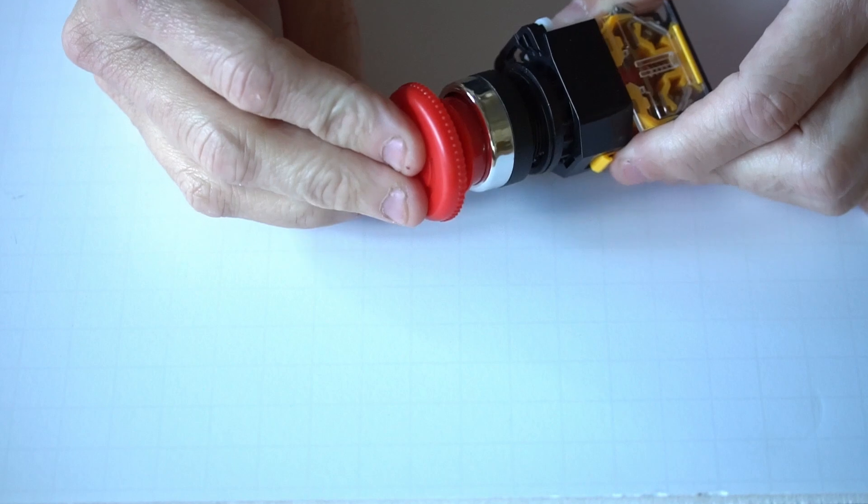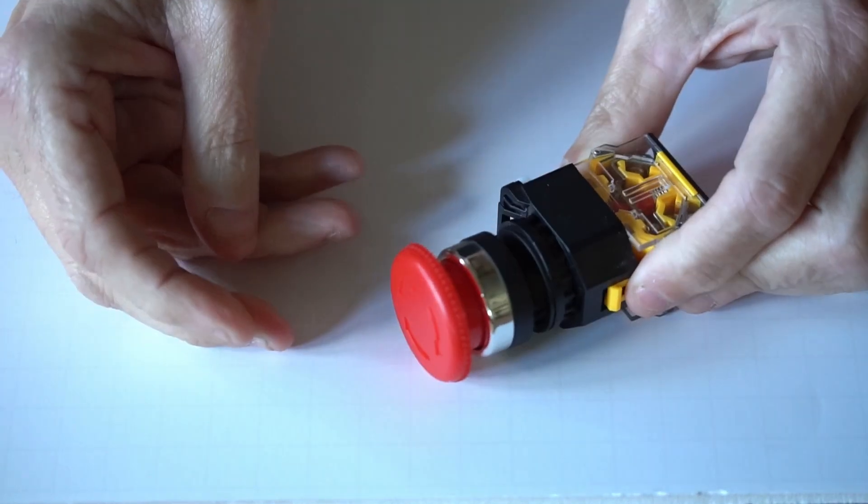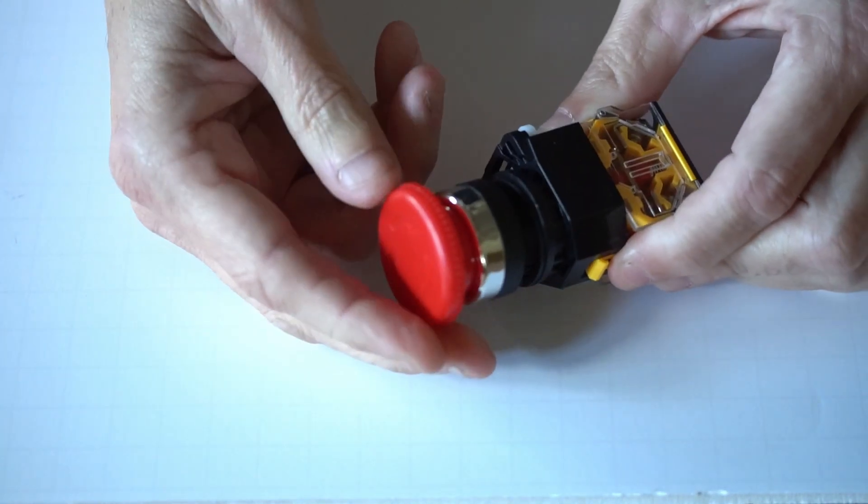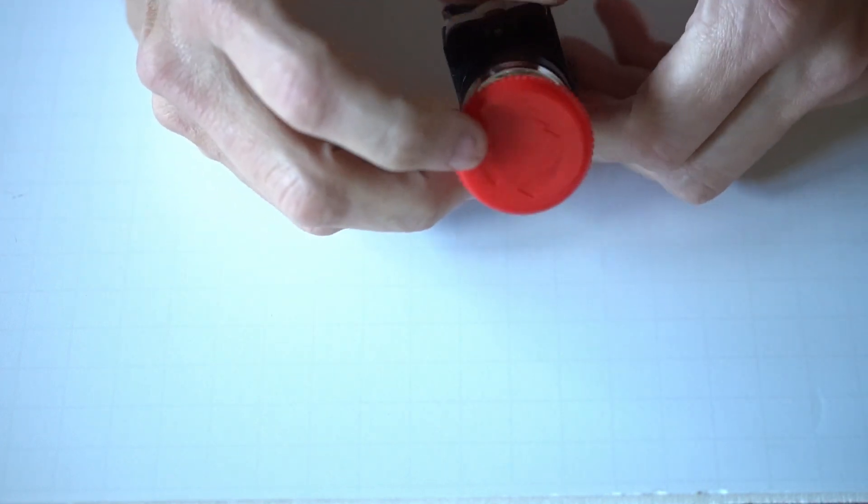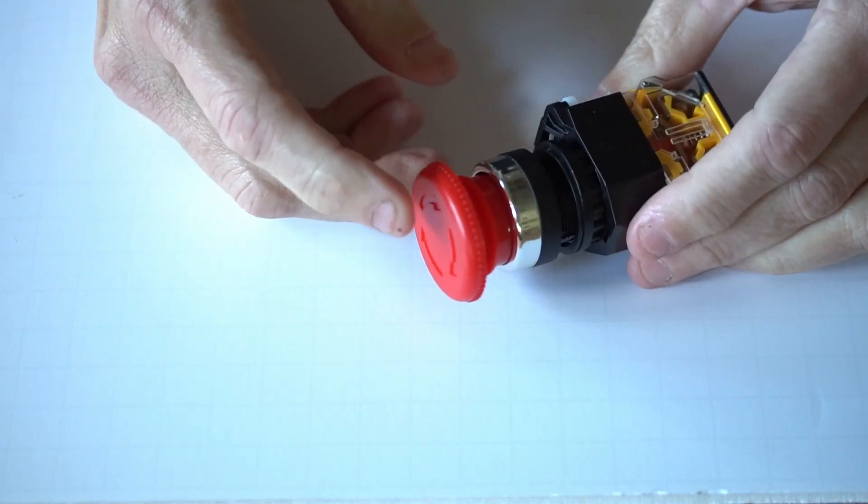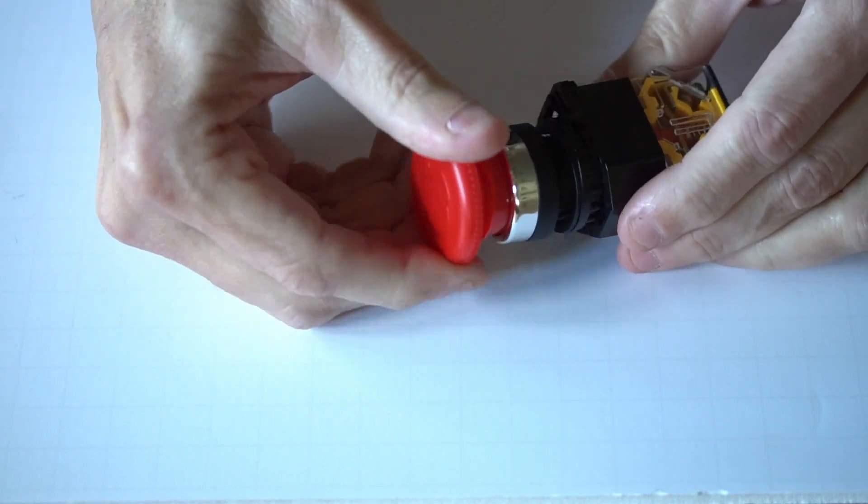The way this works is you can engage it by depressing this mushroom cap and releasing it by turning it in the direction specified by the arrows. The mushroom button can be completely removed by turning it the opposite direction of the arrows.